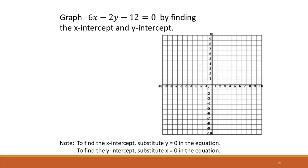This says graph 6x minus 2y minus 12 equals 0 by finding the x-intercept and the y-intercept. To find the x-intercept, you're going to allow y to be 0. So if we want to find the x-intercept, we let y equal 0.